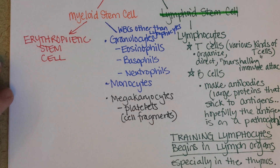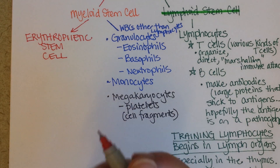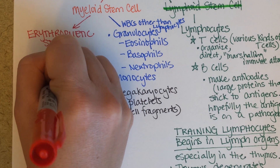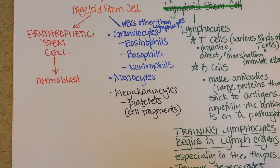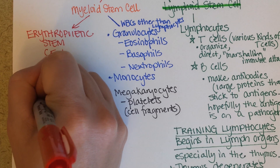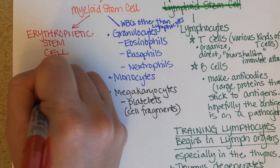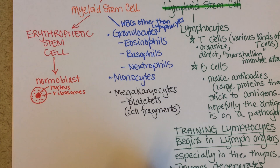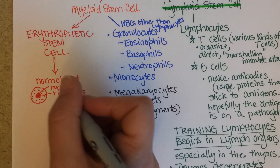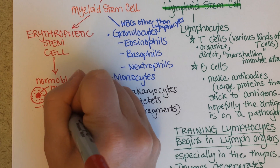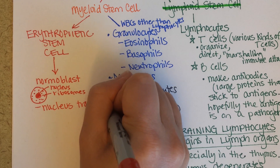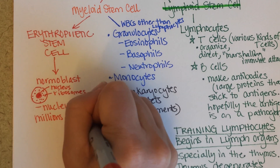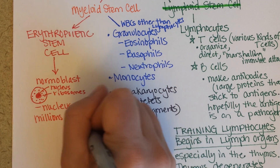Now let's look at the erythrocyte stem line. The first thing it differentiates into from an erythropoietic stem cell is called a normoblast. If you were to look at a normoblast under the microscope, you would see that it is a cell with a nucleus and lots and lots of visible ribosomes. The word 'normoblast' means a normal bud. During this time as a normoblast, the nucleus transcribes millions and millions of hemoglobin mRNA.